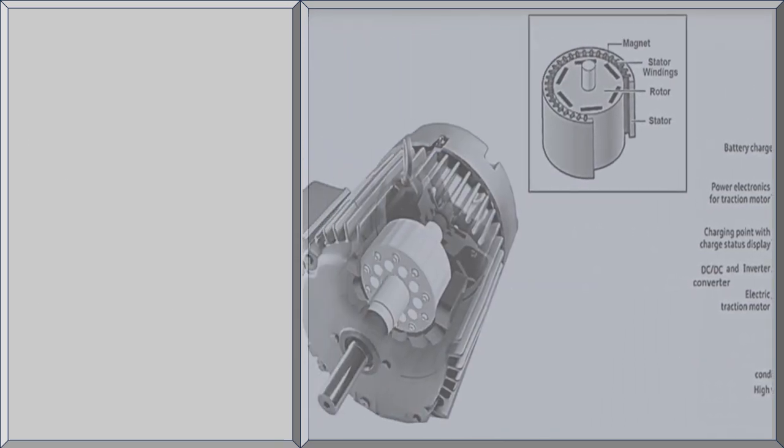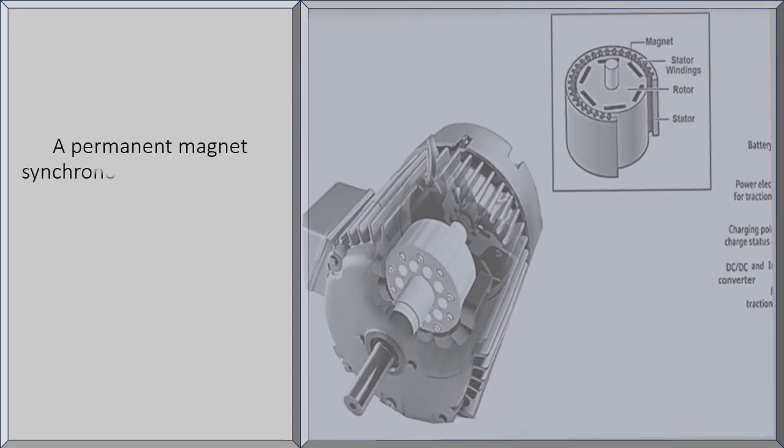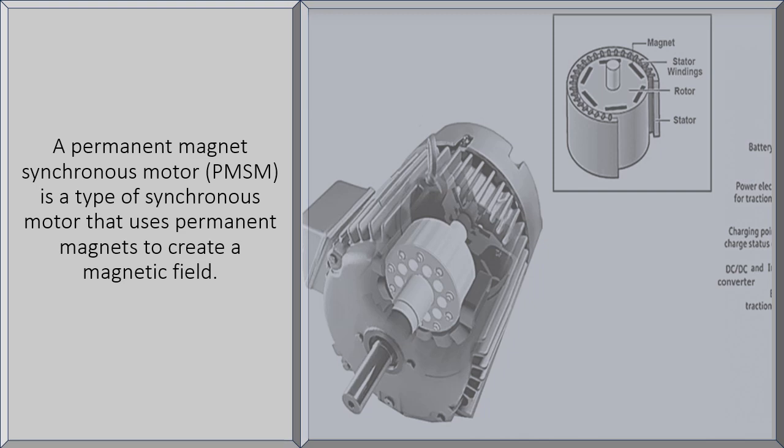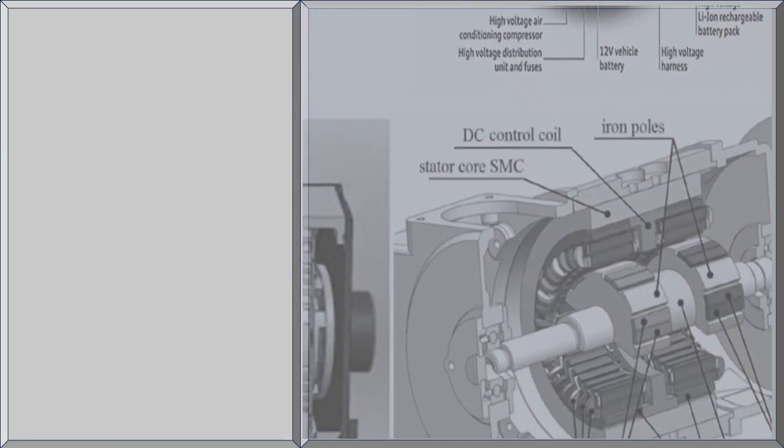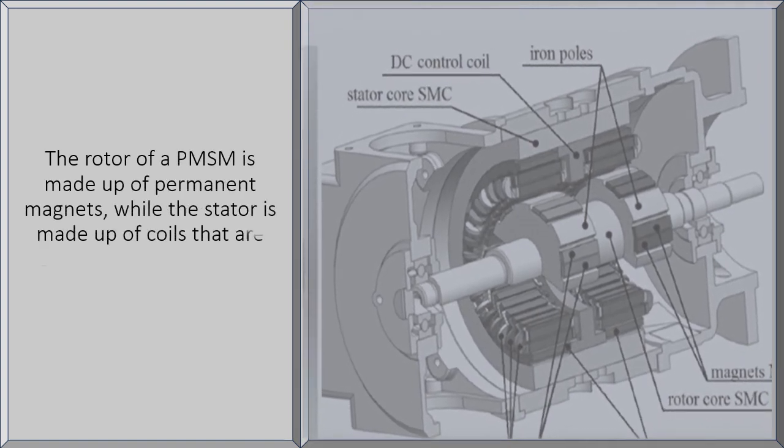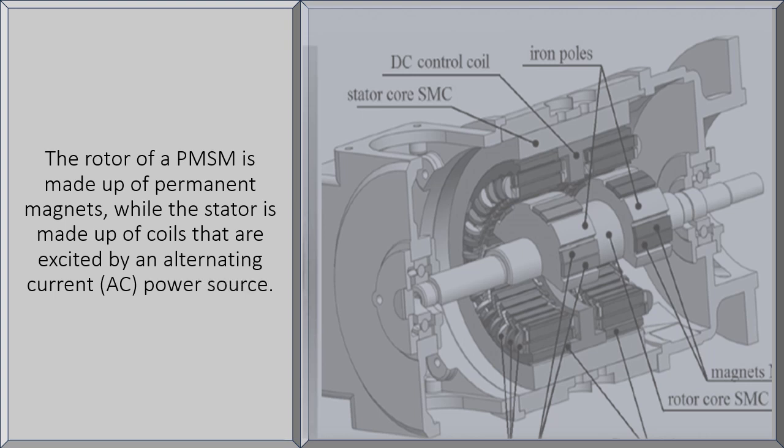A Permanent Magnet Synchronous Motor is a type of synchronous motor that uses permanent magnets to create a magnetic field. The rotor of a PMSM is made up of permanent magnets, while the stator is made up of coils that are excited by an alternating current, AC, power source.